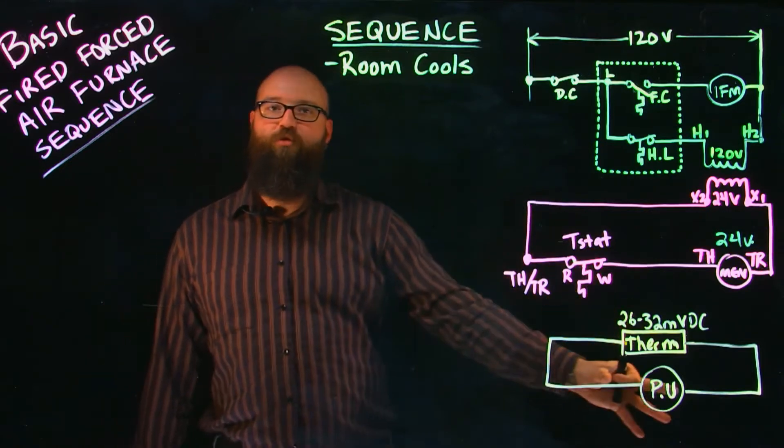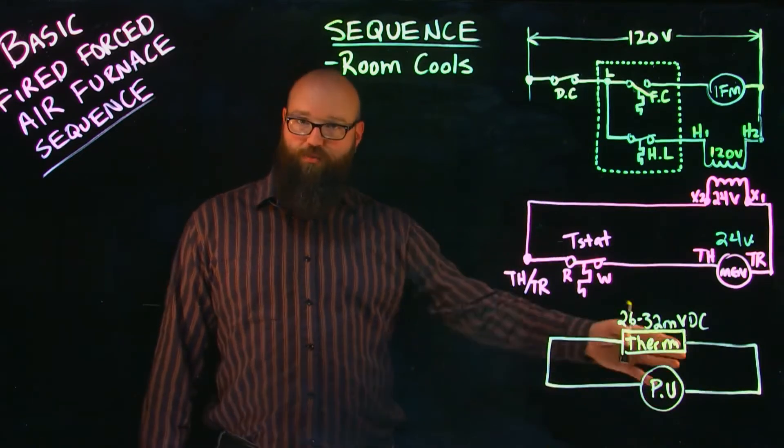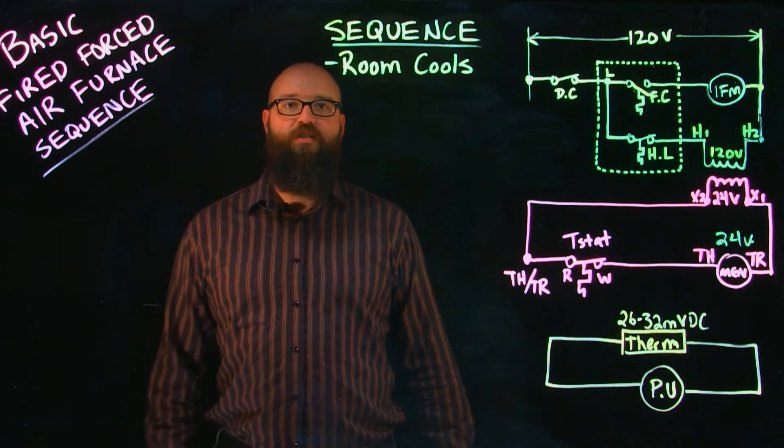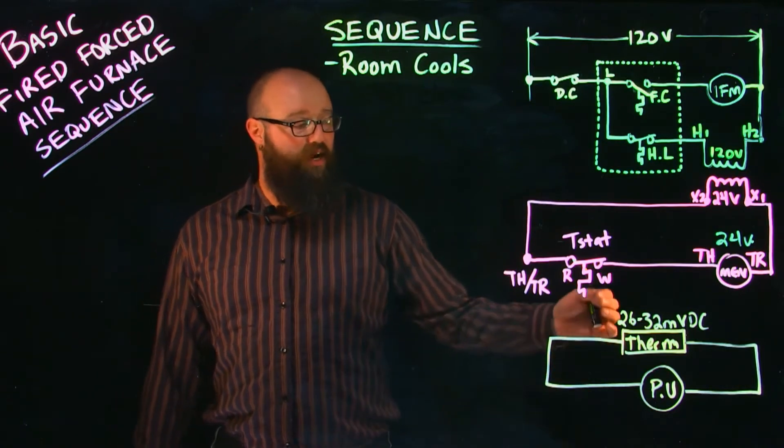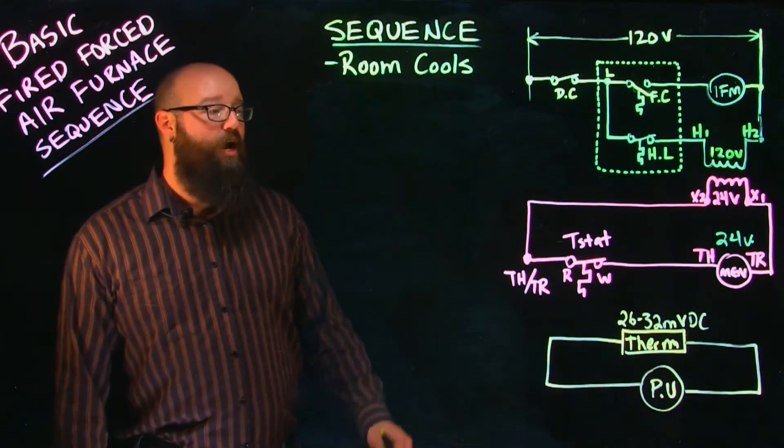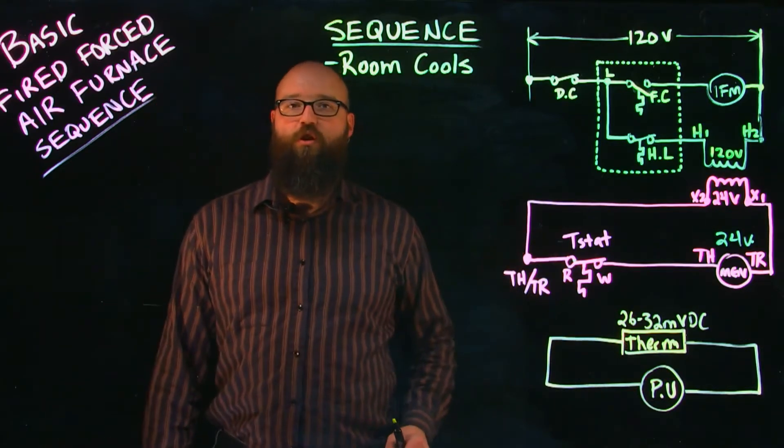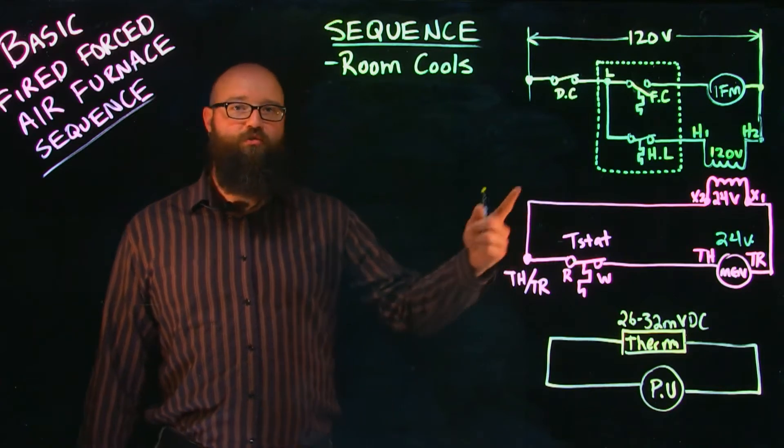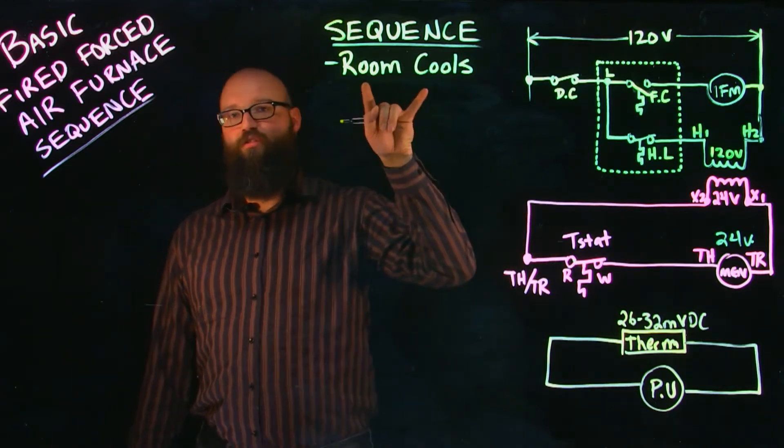I also have my flame proving circuit down here where the pilot light would already be sitting there. We have a standing pilot that's already lit and it's proving that there is a flame there so there's no problems when the gas valve opens. I also have the thermostat shown in the closed position because this is a closed loop system we are going to start off with the room cooling.